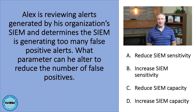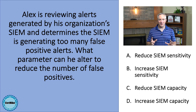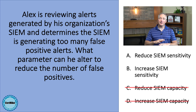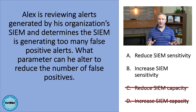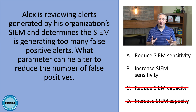Adjusting the SIEM capacity would adjust the amount of information that it can process and store, rather than changing the false positive rate, so we can eliminate both of the answer choices dealing with adjusting the capacity. So to alter the false positive rate, Alex can adjust the SIEM sensitivity.